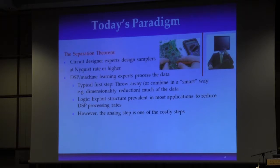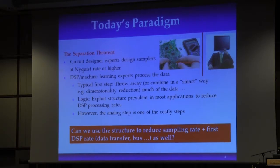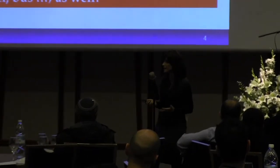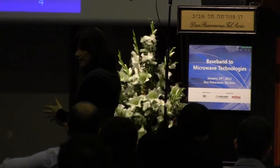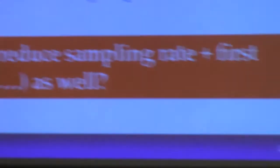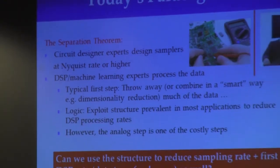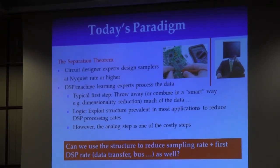If we can throw away the bits at the end — and we know we can, because all algorithms today throw away data — that means we could have thrown it away at the beginning. There was no reason to sample all of that to begin with. So how do we exploit the structure that we know exists, not only at the last step but all the way at the first step, sampling only the part of the signal containing the relevant information? If we can do that, we get tremendous savings in power, processing, and storage.